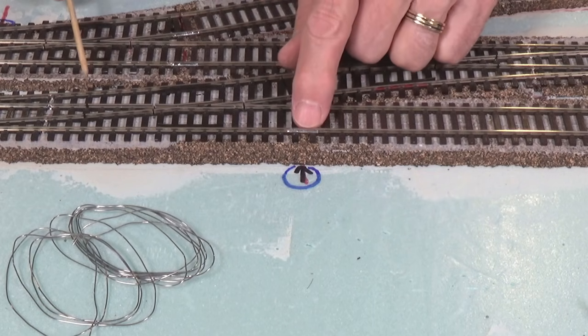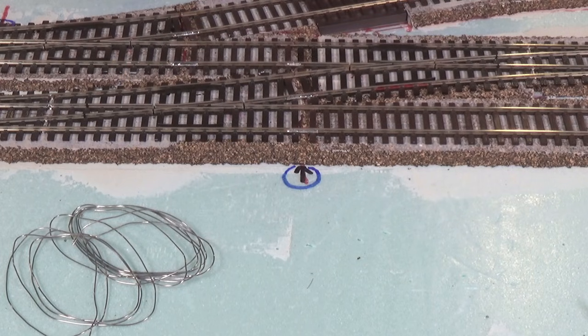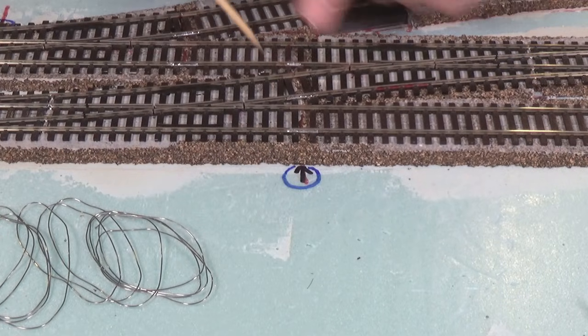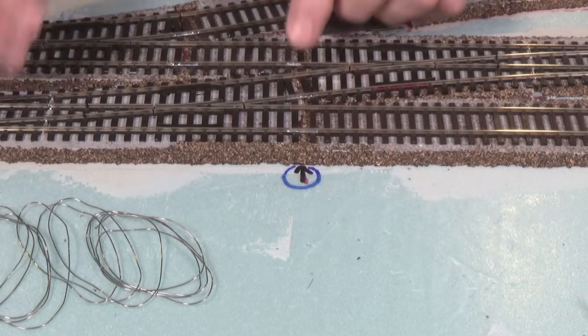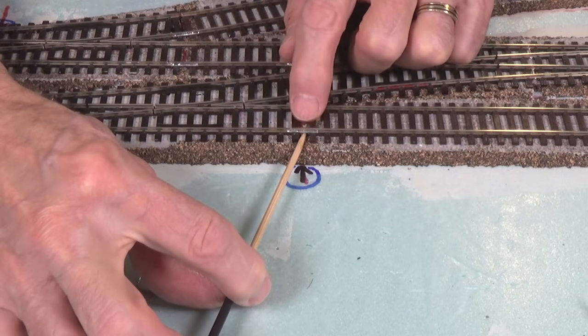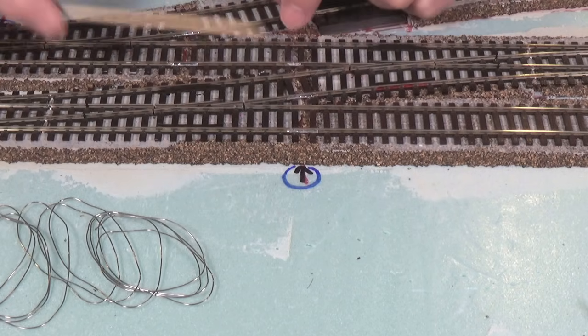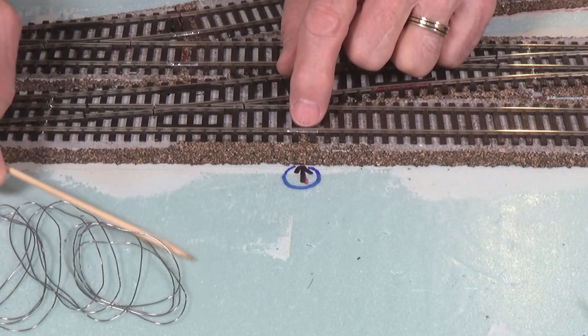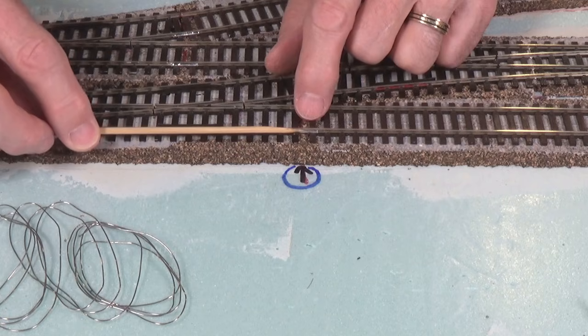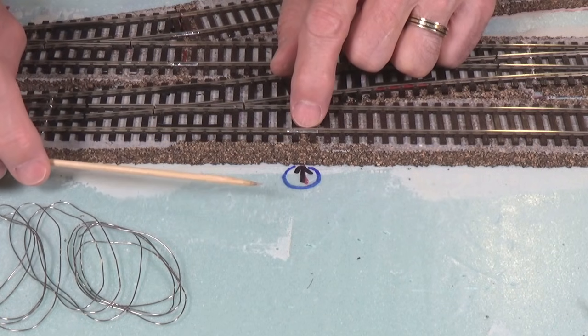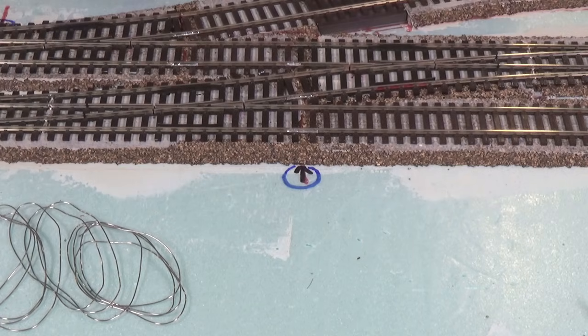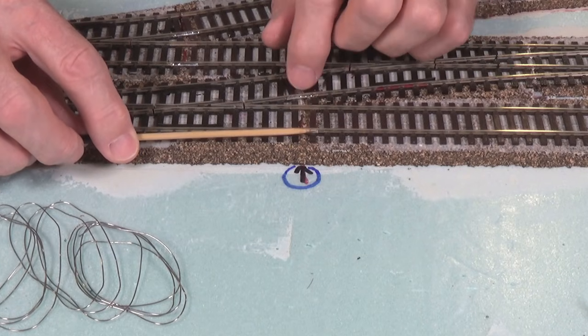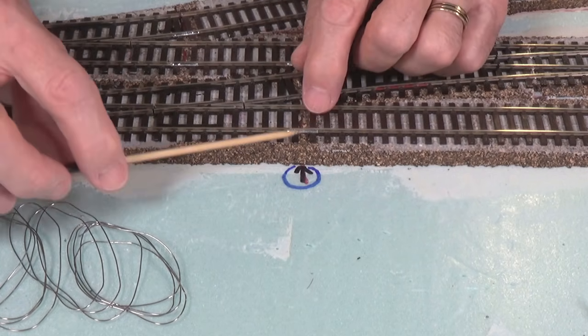Let's take a look at how we add these feeders. One of the best places to add a feeder is at a rail connector, and the reason for that is you've already got a gap in the plastic here. What I like to do is solder my feeders to the bottom of the rail so they can't be seen.